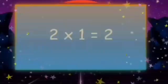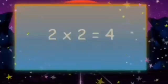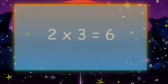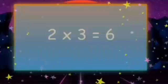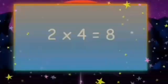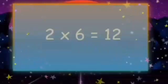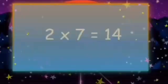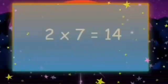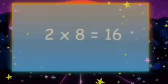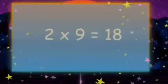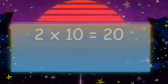2 0s are 0. 2 1s are 2. 2 2s are 4. 2 3s are 6. 2 4s are 8. 2 5s are 10. 2 6s are 12. 2 7s are 14. 2 8s are 16. 2 9s are 18. 2 10s are 20.